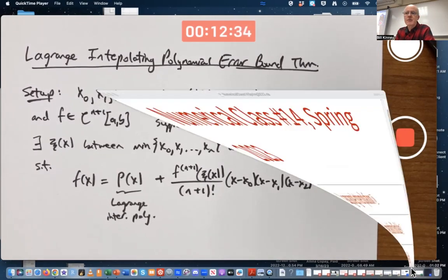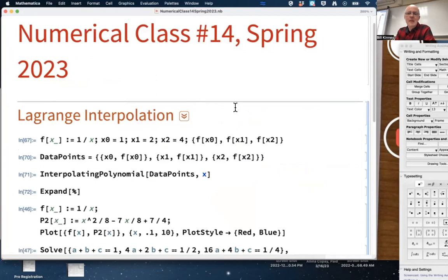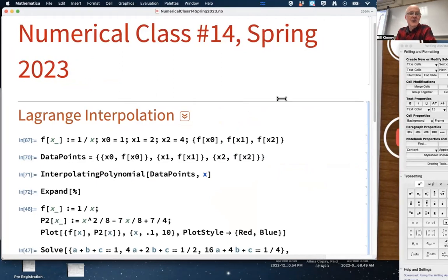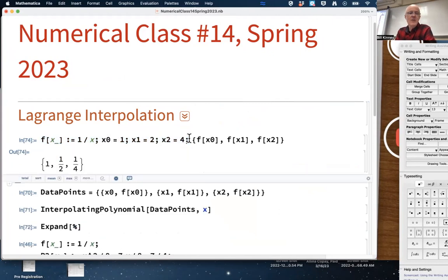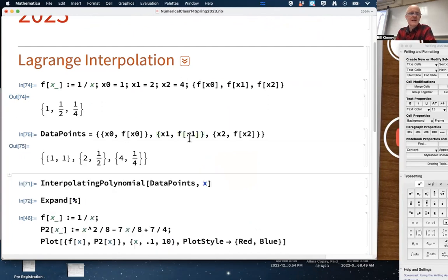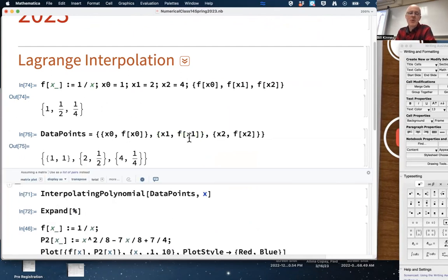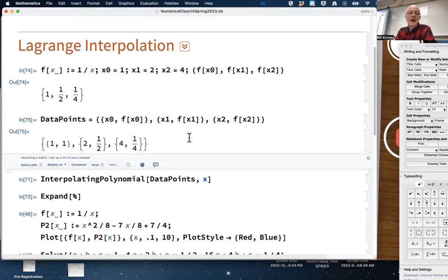Let's look at the example from Tuesday's class and see if we can figure out what this error-bound theorem would imply. Here we have the situation from Tuesday where f(x) was 1/x. Our nodes were: x0 is 1, x1 is 2, and x2 is 4. And the function values were 1, 1/2, and 1/4. As data points, here they are in a list. So these would be the points that we are trying to get a quadratic interpolation of.